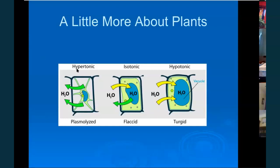In a hypertonic solution — lots of solute — tonicity is pulling strength, so it has a lot of pulling strength, which means a lot of solutes that pull water out of the cell. Isotonic means equal movement of water — no net gain on either side — the cell is slightly limp, which you'd call flaccid. Turgid means the cell has a lot of pressure; the pressure against the cell wall is called turgor pressure.